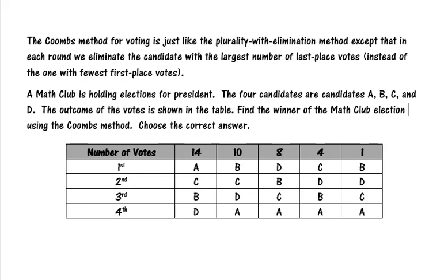A math club is holding elections for president. The four candidates are candidates A, B, C, and D. The outcome of the votes is shown in the table. Find the winner of the math club election using the Coombs method.